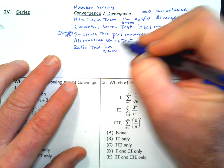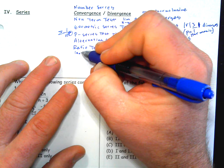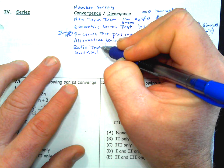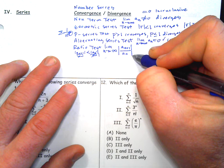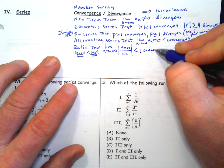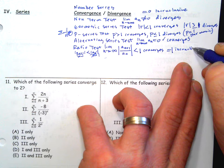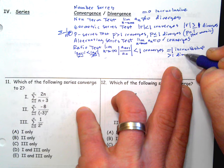The limit of the (n+1) term over the nth term has to be less than 1. If it's less than 1, it converges. If it equals 1, it's inconclusive. If it's greater than 1, it diverges for sure. That's the ratio test — we use it to find the interval of convergence for power series.